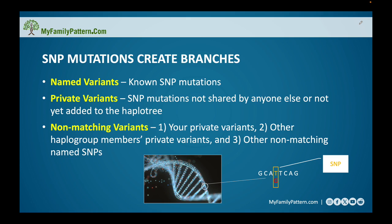Before we jump into those reports, I want to introduce some terms you may or may not be familiar with. These will help explain the concepts we're going to talk about today. When we talk about SNP mutations, these are the Y-DNA markers that Family Tree DNA tests. It's when they find that you have a chemical signature that is different for one marker than everybody else — that is what we call a mutation. Those mutations are handed down from father to son, so we're able to trace them and create those branches.